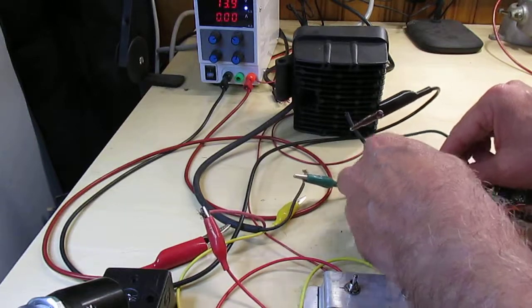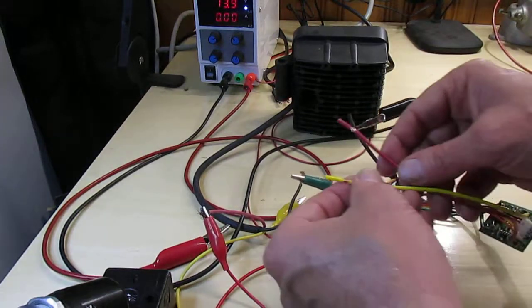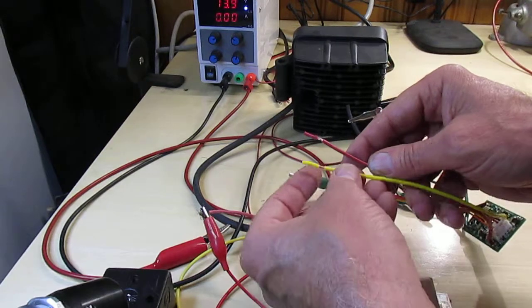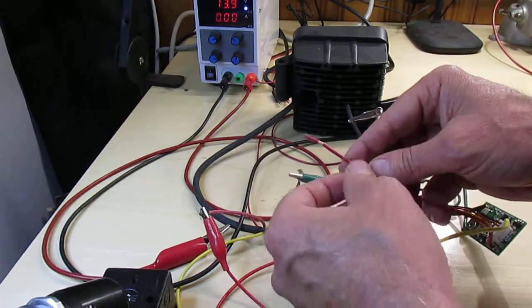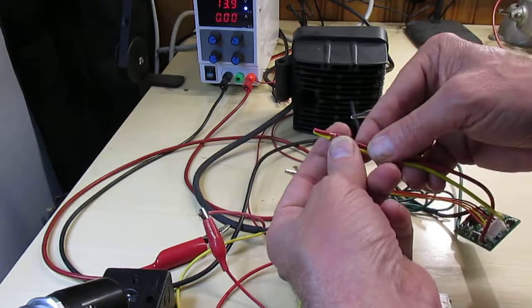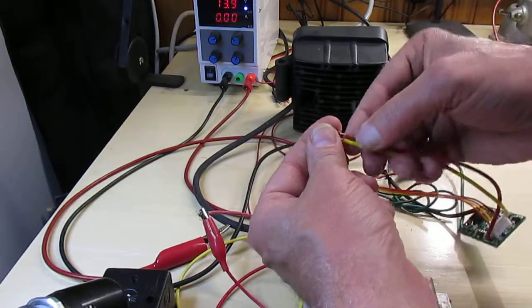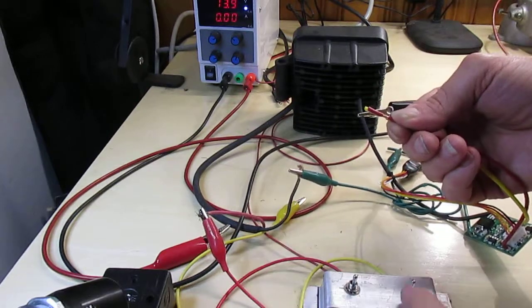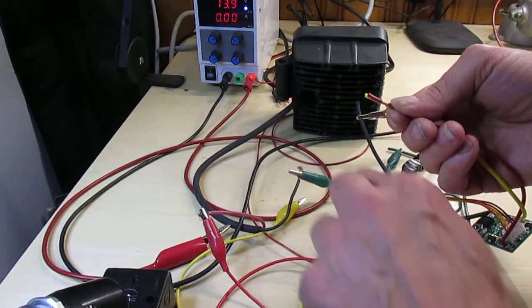This is usually behind the dash somewhere. You'll ground that to chassis. Then you've got two wires left: the red is the power wire and the yellow is high beam mode. If you don't want the dimmer, you just take the yellow and red, tie them together, and then you find the wire from your switch that puts 12 volts on your relay.